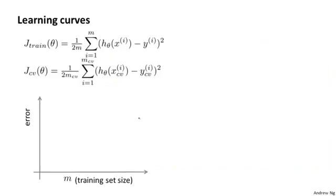Here's what a learning curve is. To plot a learning curve, what I usually do is plot J_train, which is the average squared error on my training set, or J_CV, which is the average squared error on my cross-validation set. And I'm going to plot that as a function of M, that is, as a function of the number of training examples I have.